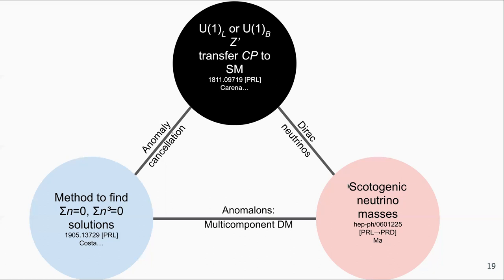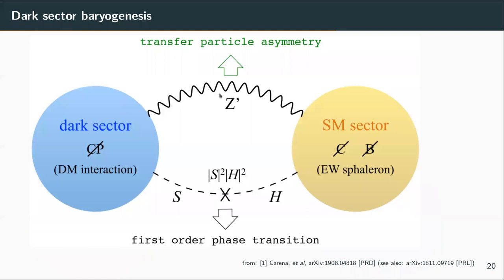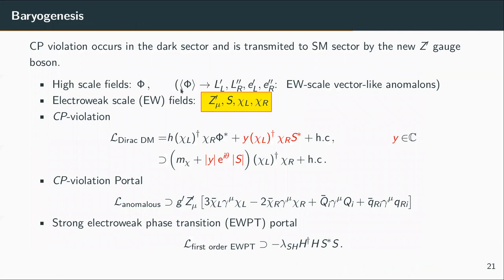The final ingredient is that we also try to explain the smallness of neutrino masses through a scotogenic mechanism — in this case for Dirac neutrinos. The original idea of Carena and collaborators is to have CP violation in the dark sector through one Yukawa coupling and transfer this asymmetry to the Standard Model sector through the anomalous coupling with the Z-prime. In addition, in the dark sector we also assume the existence of a singlet scalar that allows a very strong first-order phase transition. With these two ingredients the baryogenesis mechanism can be obtained.